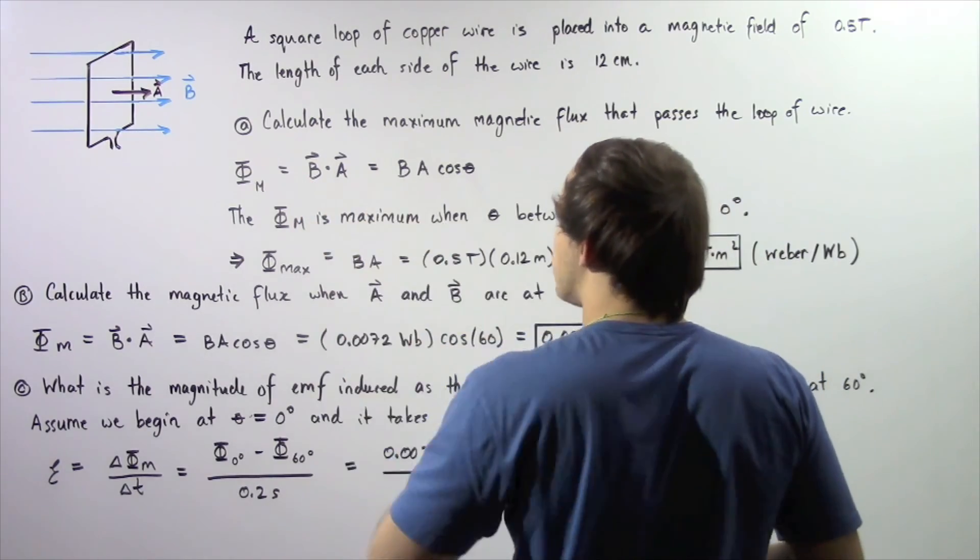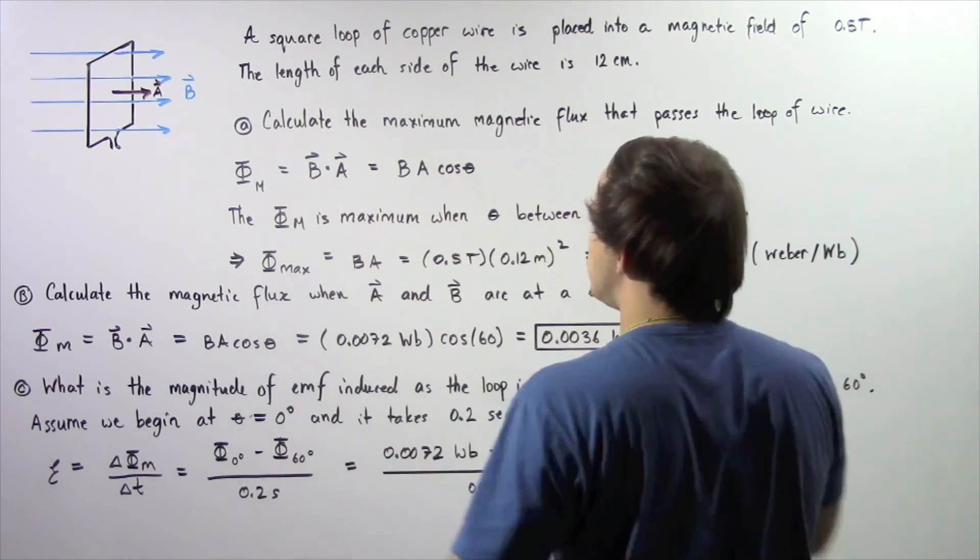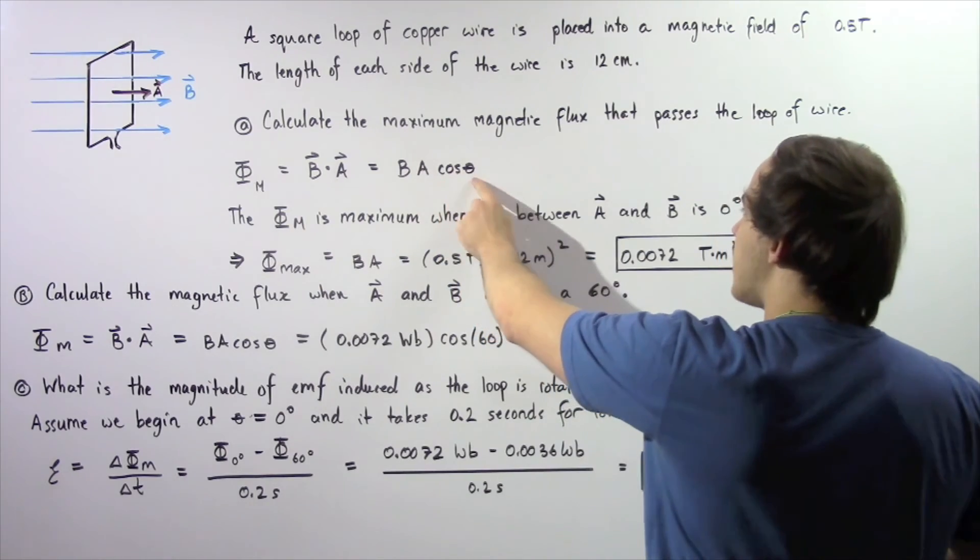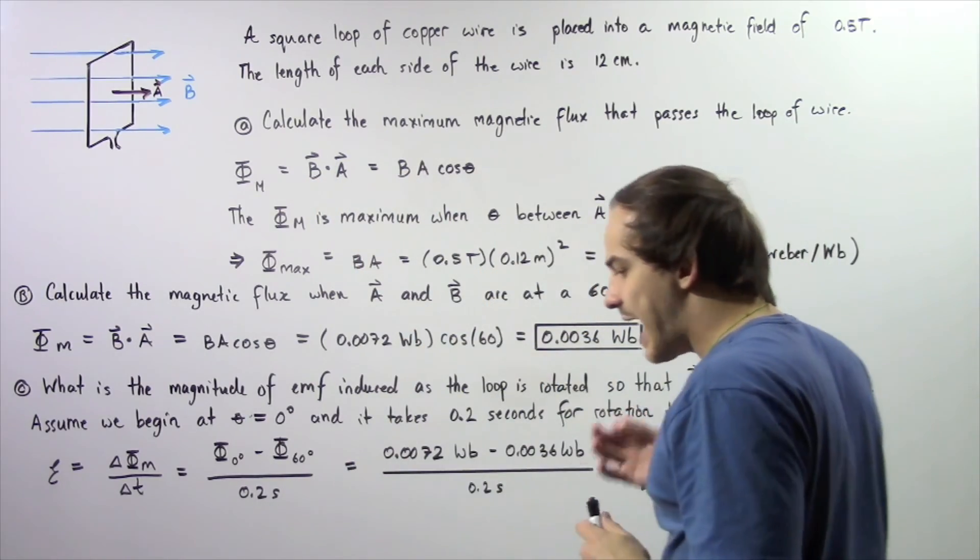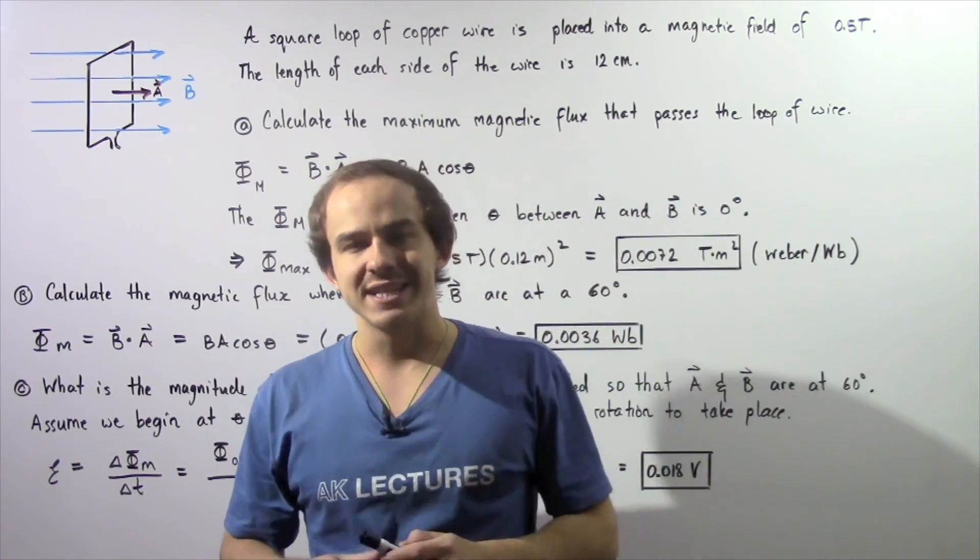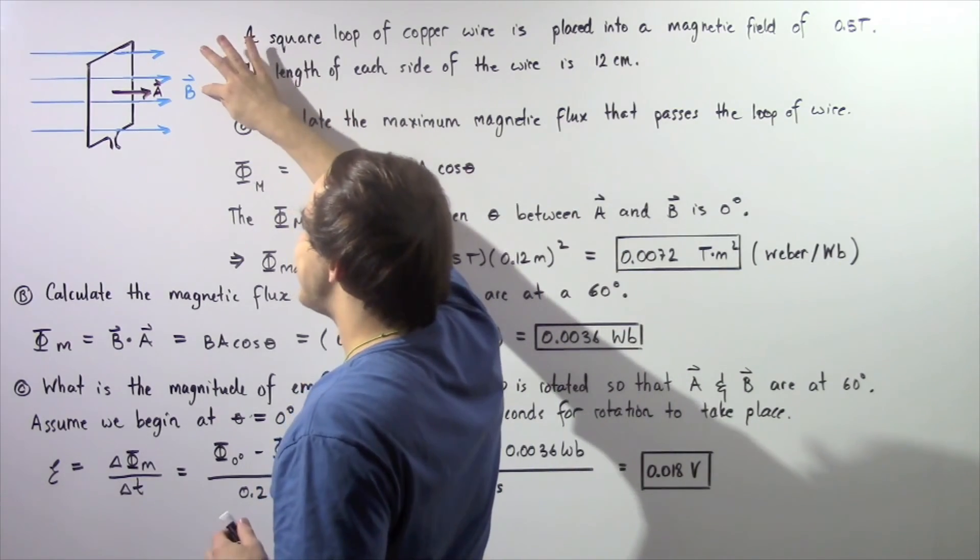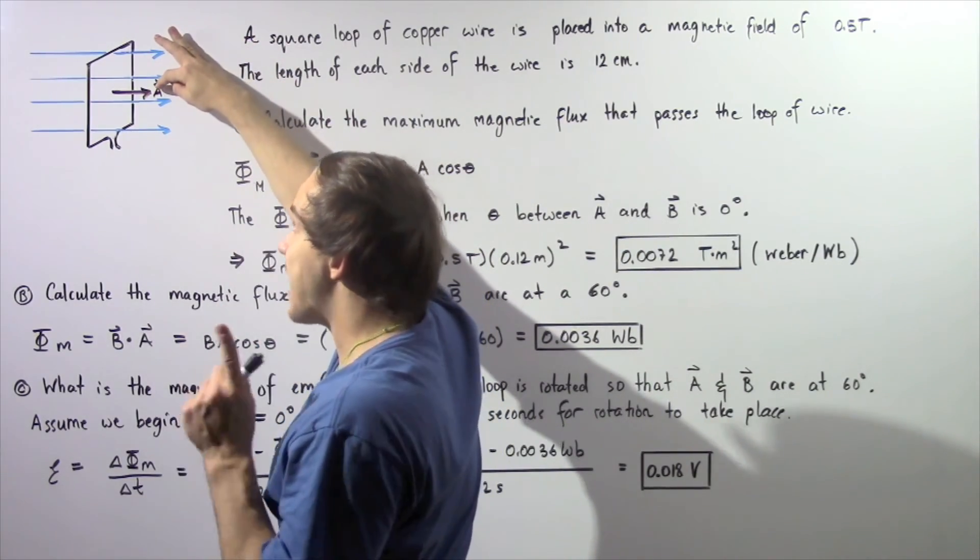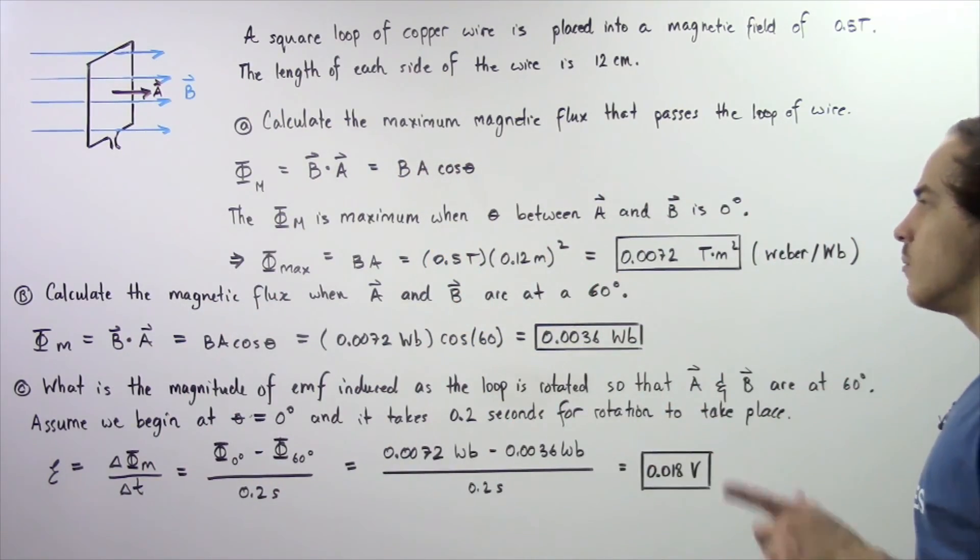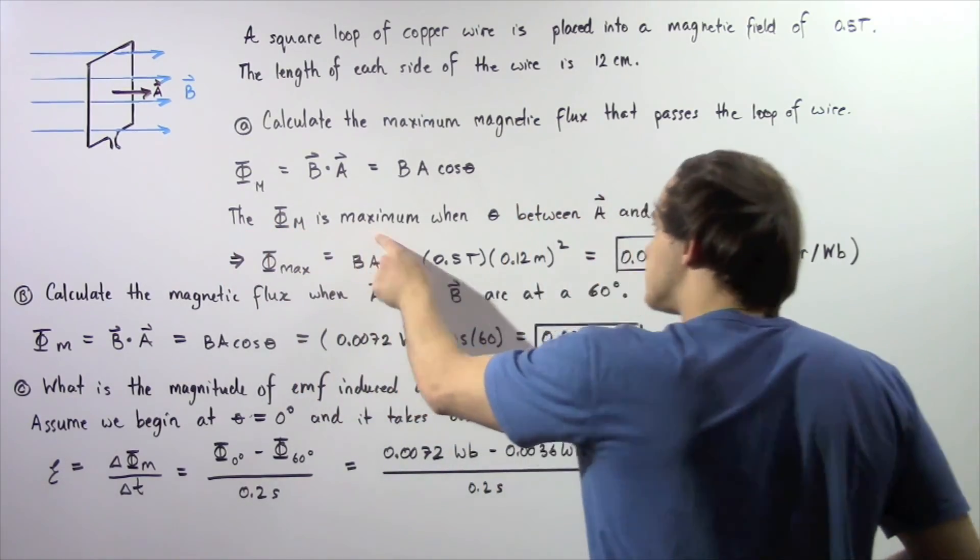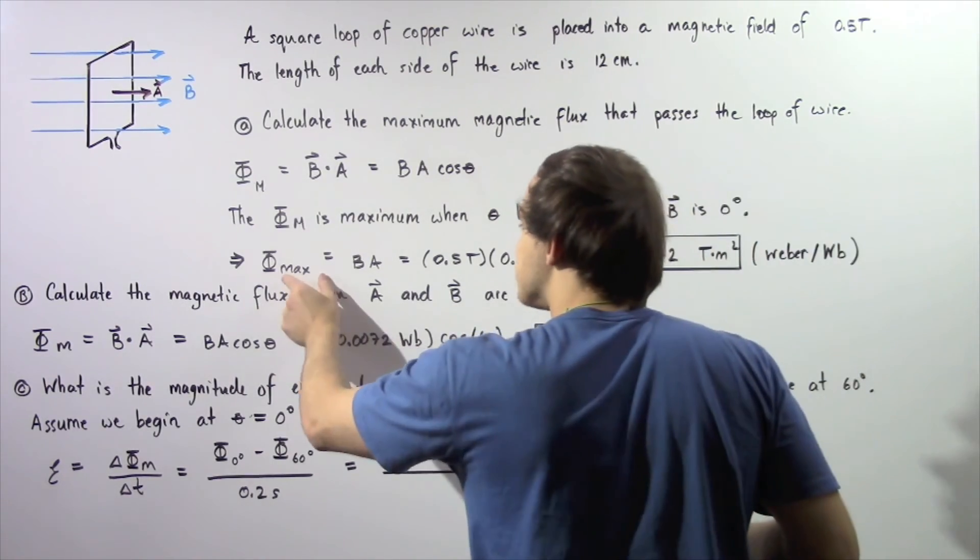And by definition of dot product, the dot product of any two vectors is equal to the product of the magnitude of these two vectors multiplied by cosine of the angle theta, where the angle theta is the angle between these two vectors. Now to calculate the maximum quantity of magnetic flux, we have to choose our angle to be zero. So when the angle between the magnetic field B and our face vector A is zero degrees, our magnetic flux is assumed to be at a maximum.